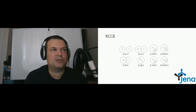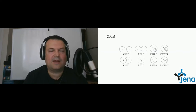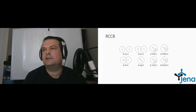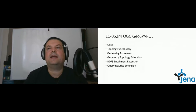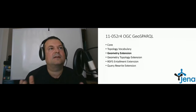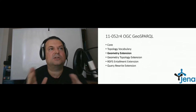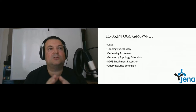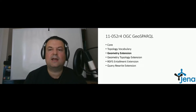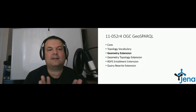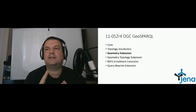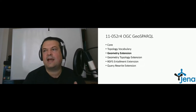We talked about the topological relationship vocabulary — we provide that vocabulary in Jena for you to annotate your data and build your ontology and dataset. In the next step, we look at the geometry extension. We haven't covered geometries yet — we only talked about spatial features without a geometry component. In the geometry extension module, we add basic geometry types, making use of components such as points, line strings, and polygons.